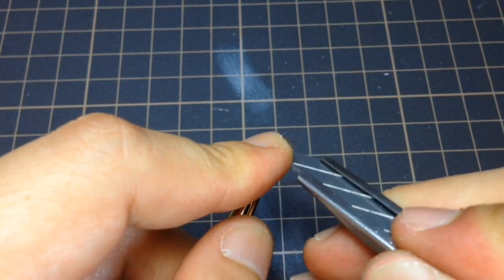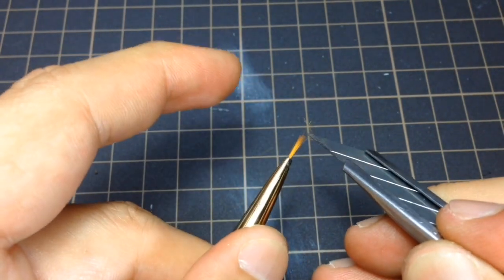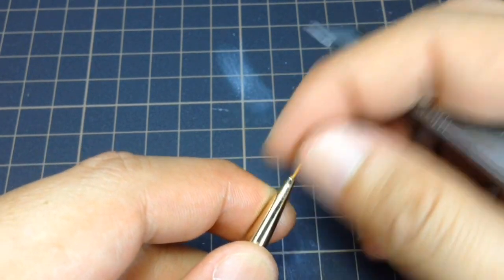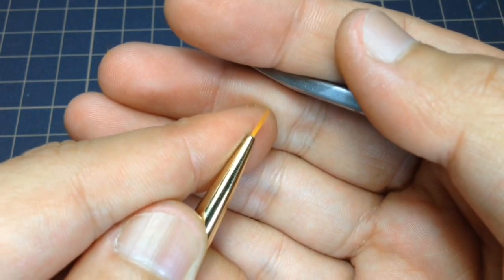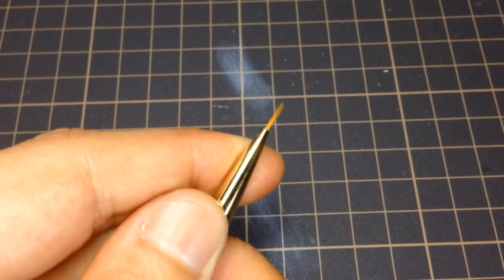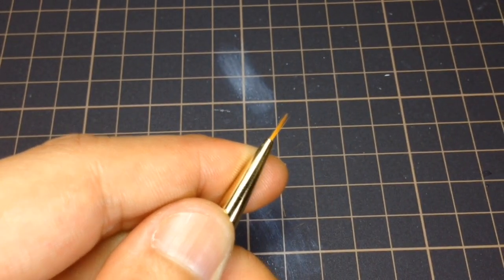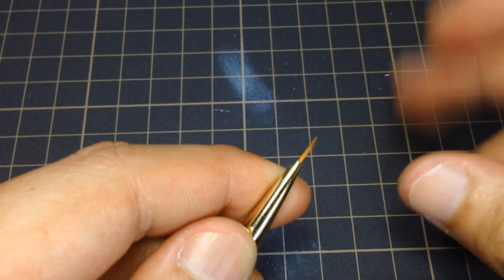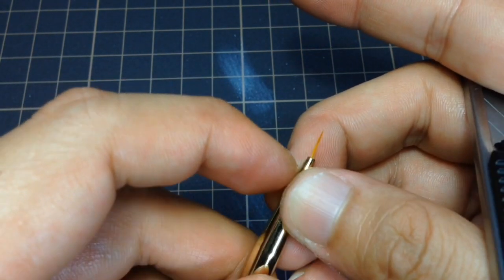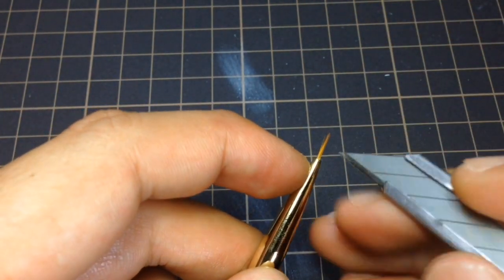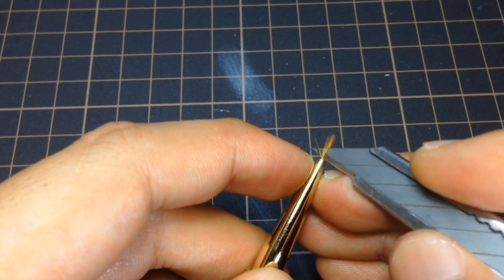So I'm going to cut this much first and then let's focus. Okay, not enough. I'm going to make it a bit smaller. Cut it from the other side. Split the brush.